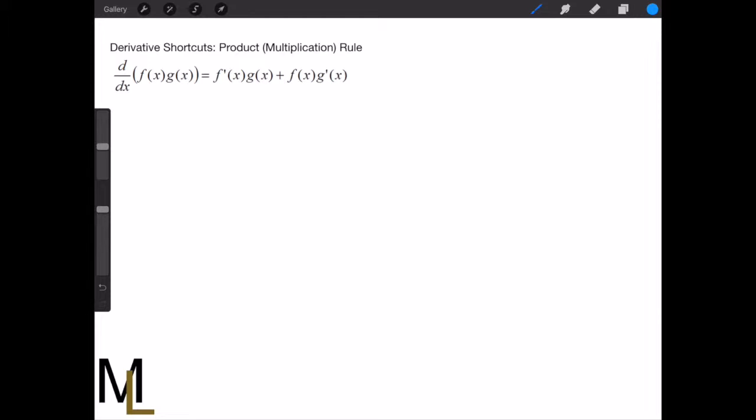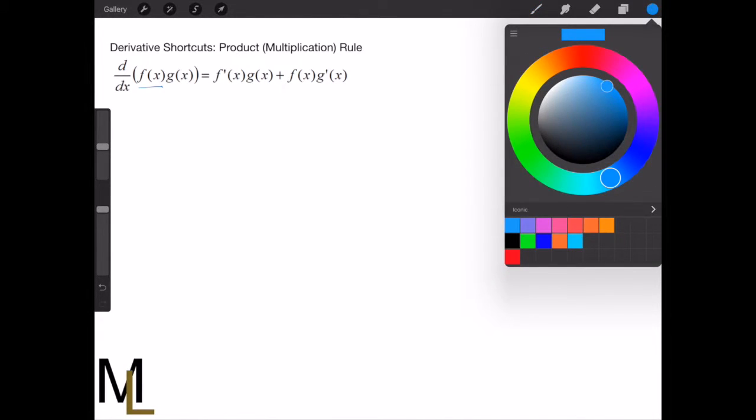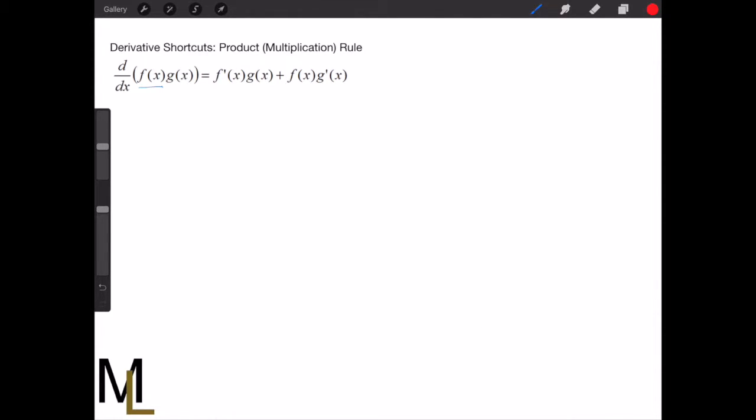In this case, the product rule tells you that when you take the derivative of two functions multiplied by each other—we use blue for f(x) and red for g(x)—you take the derivative of the first times the second.